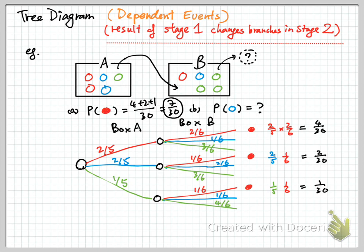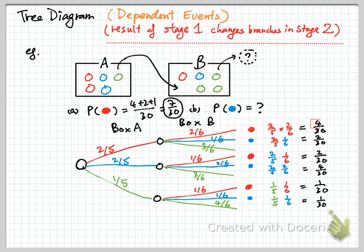Likewise, we then do that for the blue. To get the blue one, we have this one, this one, and also this one. To get the first case, we pick the red one first and then the blue one; the second is blue followed by blue; and the third is green followed by blue. So the probabilities are 2 over 30, 4 over 30, and 1 over 30. Adding them up: 2 plus 4 plus 1 is the same — it is also 7 out of 30.